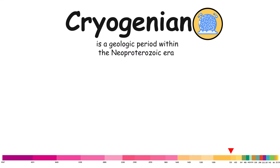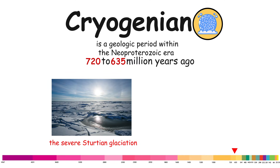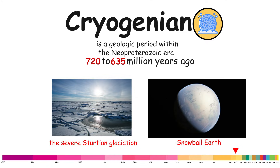Cryogenian. The Cryogenian is a geologic period within the Neoproterozoic era, spanning approximately from 720 million to 635 million years ago. After the previous boring billion years of stability, at the beginning of the Cryogenian, the severe Sturtian glaciation began, freezing the entire Earth in a planetary state known as Snowball Earth.